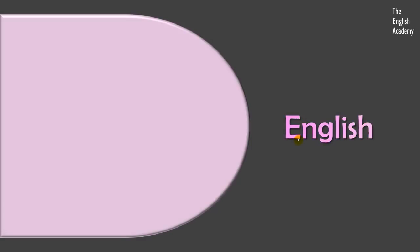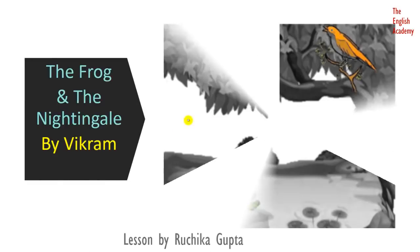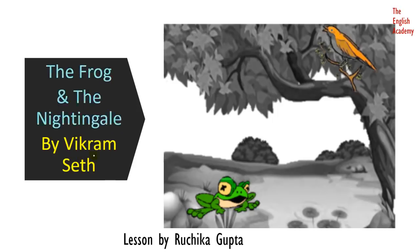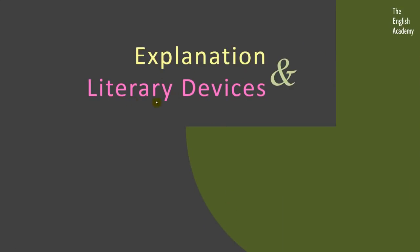Hello students, I welcome you to this class. Here we will discuss a lesson in English for students of class 10. The name of the poem is The Frog and the Nightingale, written by Vikram Seth. I am your teacher Ruchika Gupta. Here we will discuss the explanation of this poem and the literary devices. We will cover stanzas 16 to 27 and then discuss the literary devices. This is the second part of the video. If you want to see the first part where we discussed stanzas 1 to 15, the link is given in the description box. So let us begin.